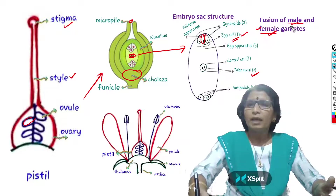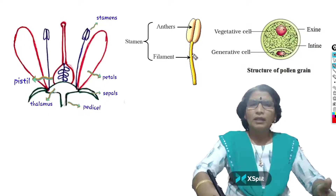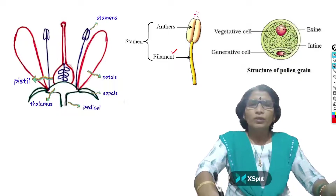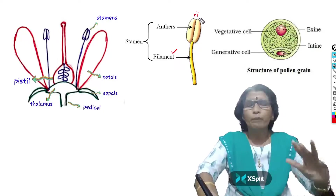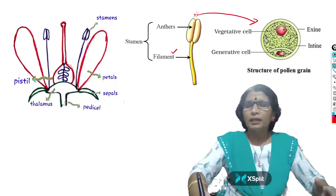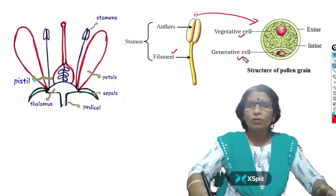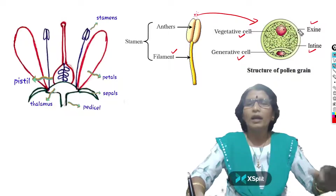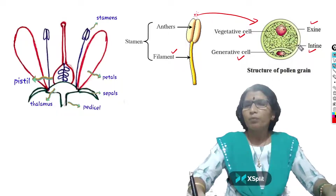Now I will tell you about the male gamete location. In the flower, the male sex organ is the stamen. At the base of the stamen is a thin structure called the filament, and above the filament the bulged structure is called the anther. The anther dehisces — that means it breaks open — and releases a powder-like structure called pollen grains. In a pollen grain, two cells are present: a larger vegetative cell and a smaller generative cell. The pollen grain is surrounded by two walls — the exine (outer, thick, made of sporopollenin) and the intine (inner, thin, made of pecto-cellulose).